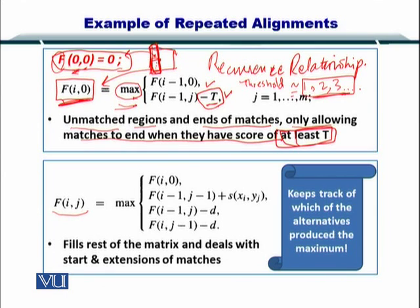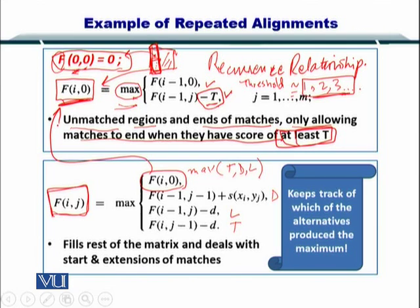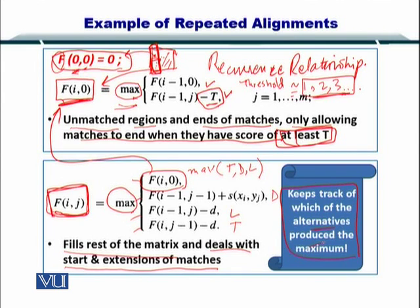Next you want to compute the rest of the matrix here. If you remember in the Needleman-Wunsch and the Smith-Waterman algorithm you did a maximal on top, diagonal, and left elements. So here you can see this is your diagonal element, here is your left element, and here is your top element. You just take a maximum from these four values and you can set a position in the matrix. In this way you can fill the rest of the matrix as well as deal with start and extension of matches. We want to keep track of the alternatives produced by the maximum.